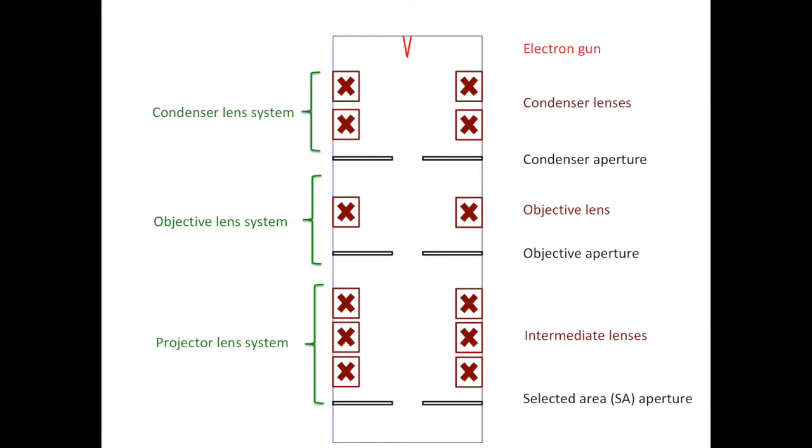To correct astigmatism, we have stigmators. In the condenser lens system, we have the condenser stigmator. The condenser stigmator sits between the condenser lenses and the condenser aperture. Similarly, in the objective lens system, we have the objective stigmator. The objective stigmator sits between the objective lens and the objective aperture. And in the projector lens system, we have the diffraction stigmator, which we don't use very often.